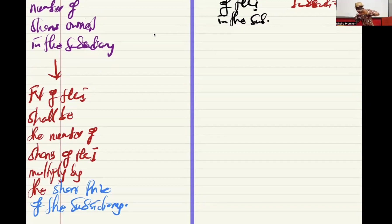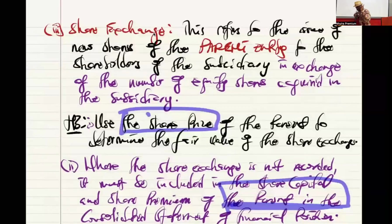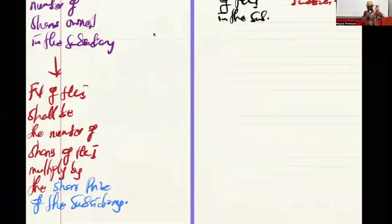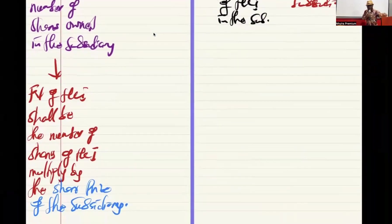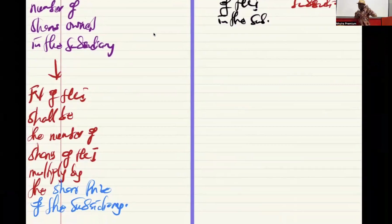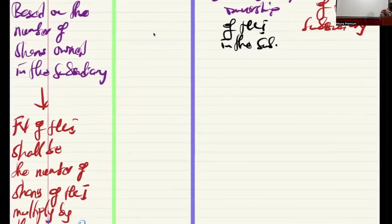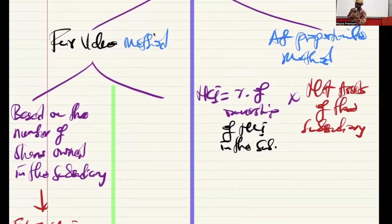Know when to use the share price of the subsidiary versus the share price of the parent. The share price of the parent will only be used when dealing with a share exchange. The share price of the subsidiary will only be used when valuing NCI based on the number of shares owned.